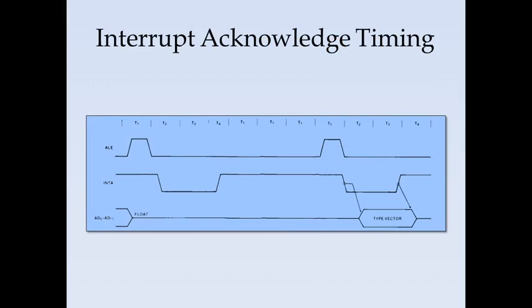For interrupt acknowledgement in minimum mode: after receiving an interrupt, an interrupt acknowledge is given. Based on the type of interrupt, the interrupt type is placed on the address lines for the vector interrupt to proceed.